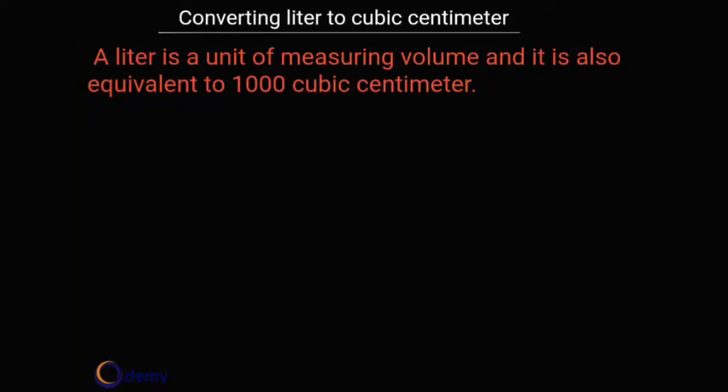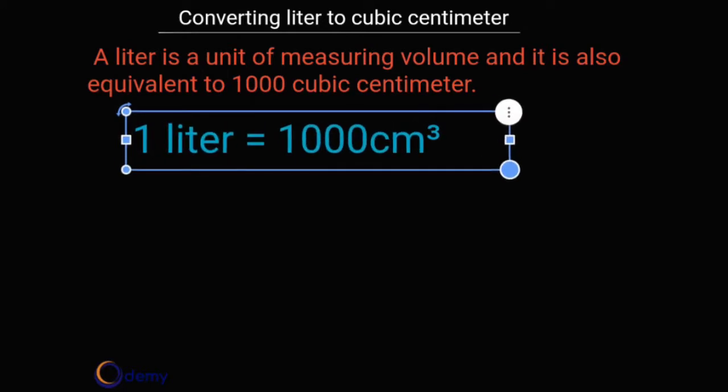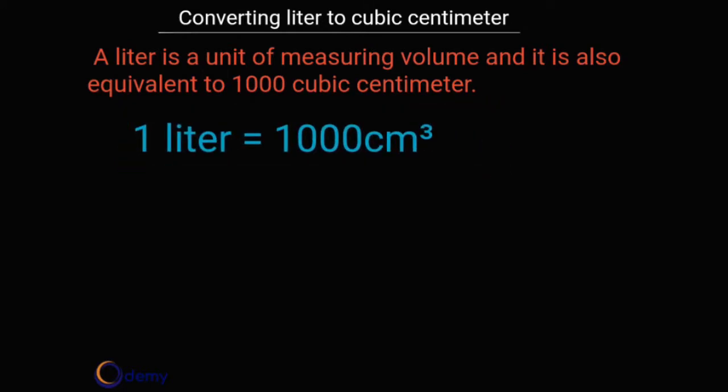Welcome. In our lesson today we want to learn how to convert liters to cubic centimeters. A liter is a unit of measuring volume and it is also equivalent to 1000 cubic centimeters. That means one liter is the same thing as 1000 centimeter cubed.